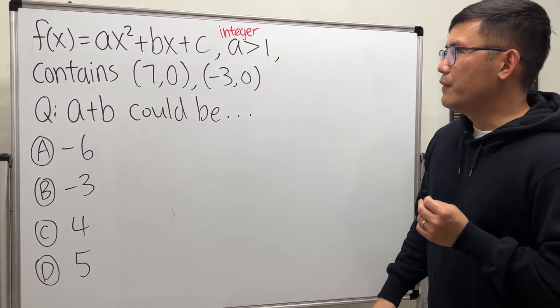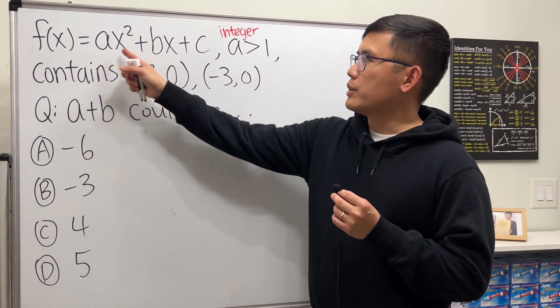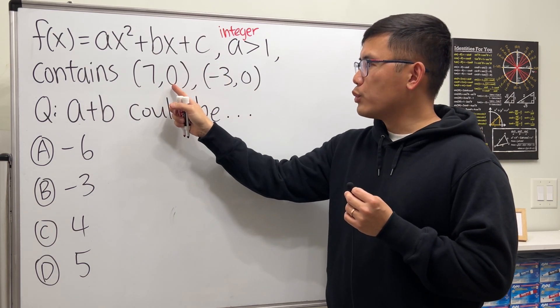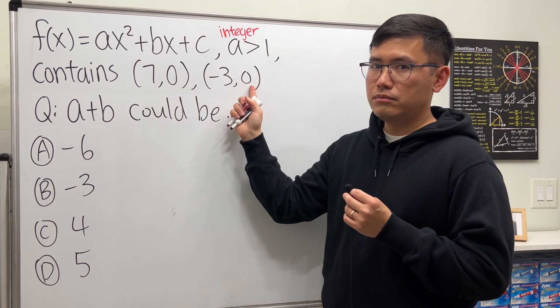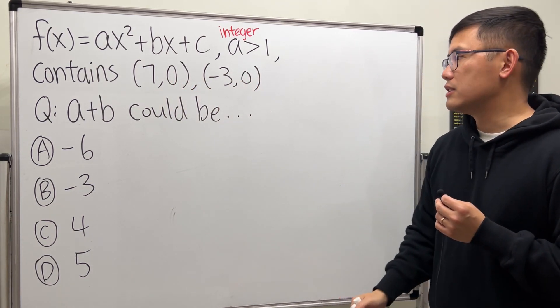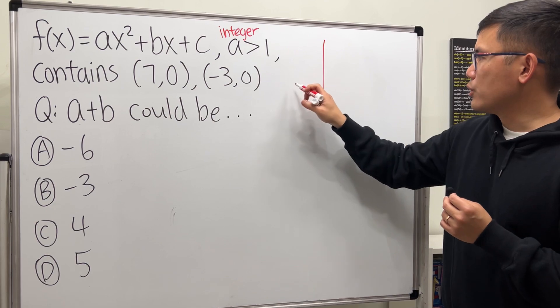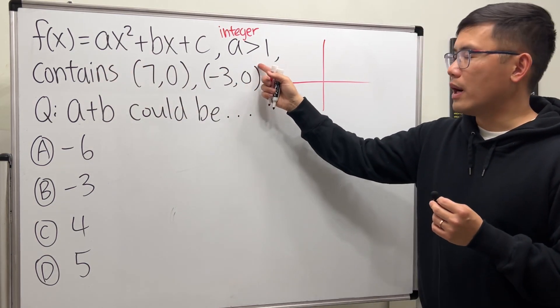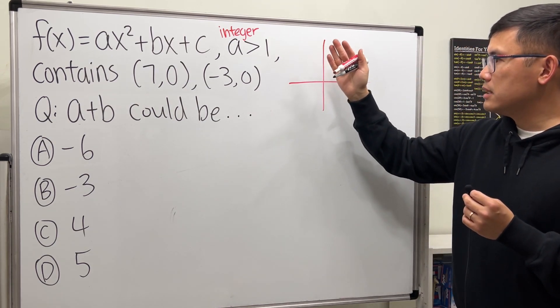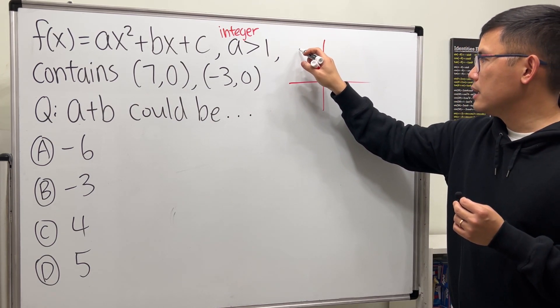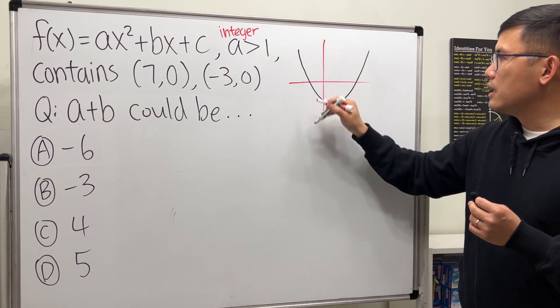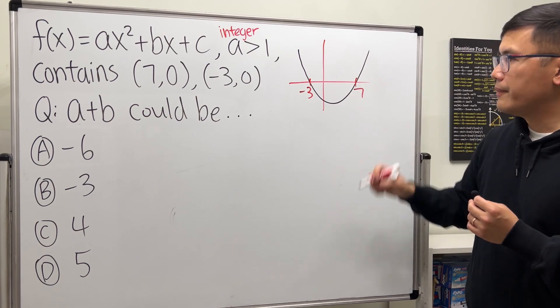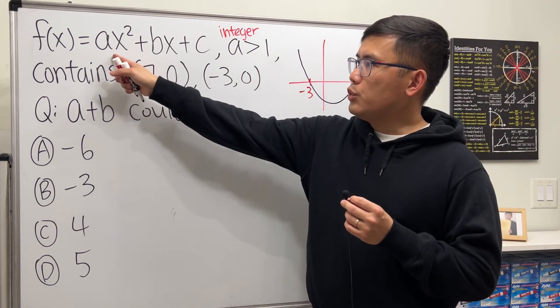Okay, firstly we have a quadratic function in the standard form but we have these two points. The y values here are zero so we know that these two right here are the x-intercepts. I can give you guys a picture real quick because a, the coefficient of x squared, is greater than one which is positive. That means the graph of it will be an open up parabola something like this. This right here will be -3 and this right here will be 7.